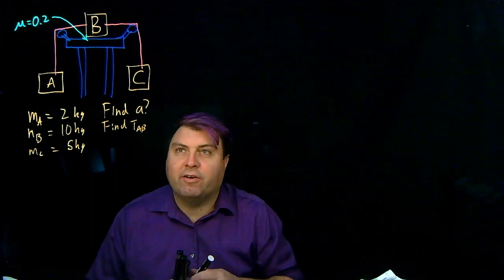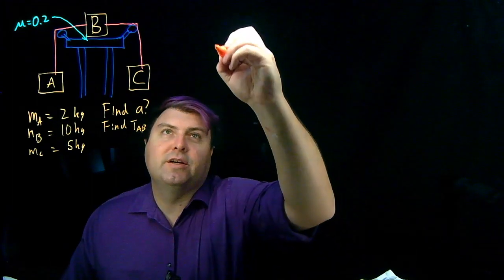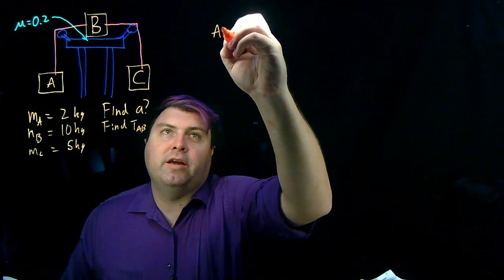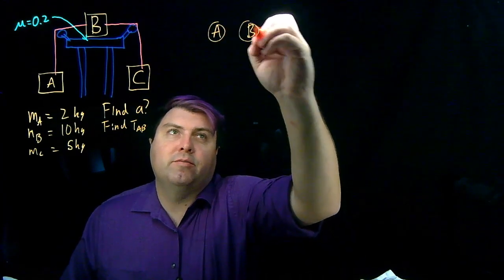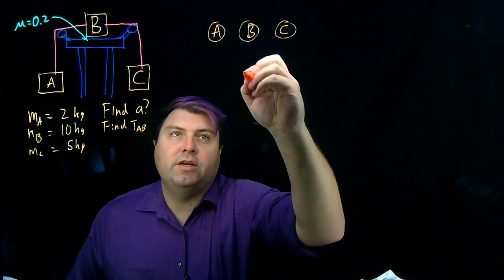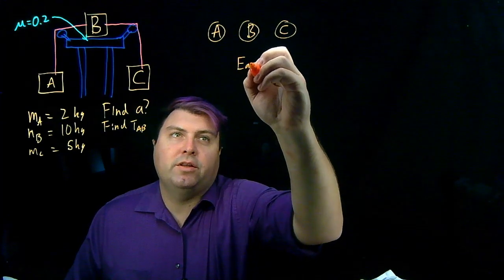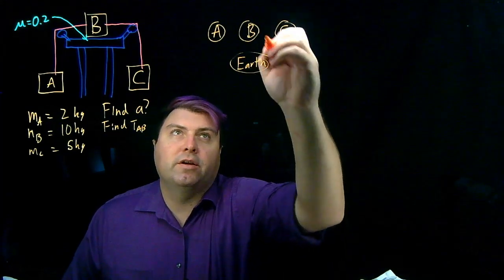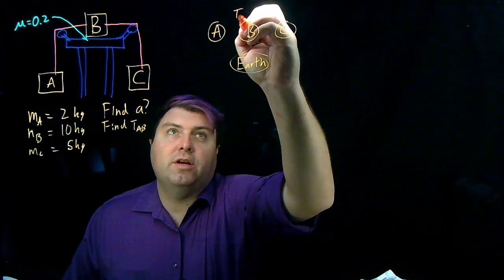Well, we can start out with an interaction diagram. That's going to help us out quite a bit. So we can draw our A, B, and C. Underneath we can put in the Earth, and above we can put the table.